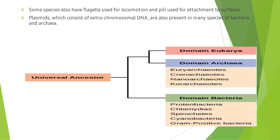Plasmids, which consist of extra-chromosomal DNA, are also present in many species of bacteria and archaea. The universal ancestor is divided into domain eukarya, domain archaea, and bacteria.